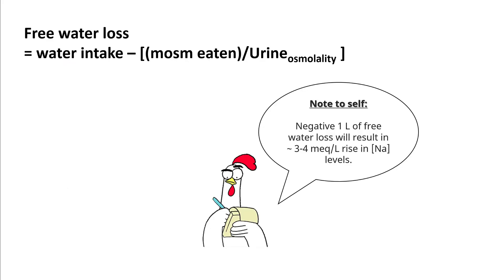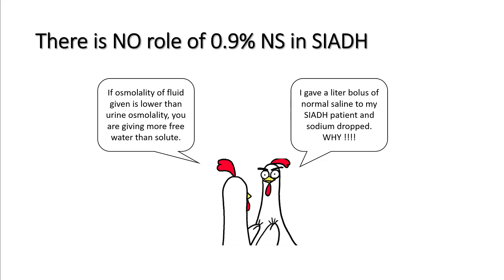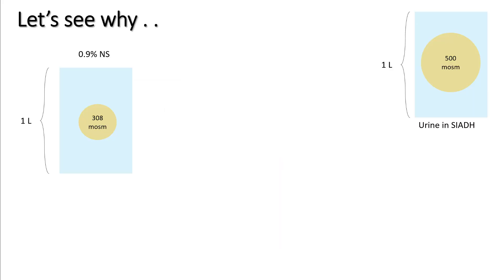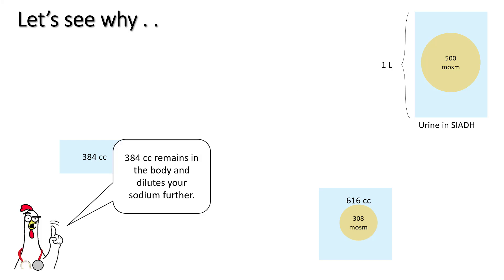Free water loss equals water intake minus mOsm eaten divided by urine osmolality. A negative 1 liter free water balance results in approximately a 3 to 4 mEq/L sodium rise, depending on total body water. There is really no role for 0.9% normal saline in SIADH — normal saline has only 300 mOsm, and if the patient's urine osmolality is higher, say 500, the saline is excreted in less water, leaving a net positive free water balance that lowers sodium.